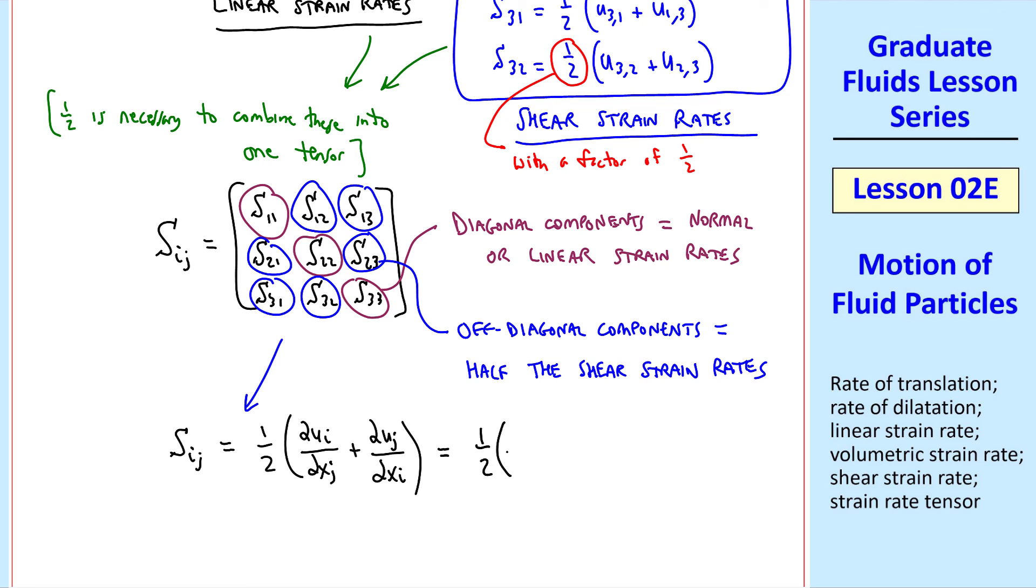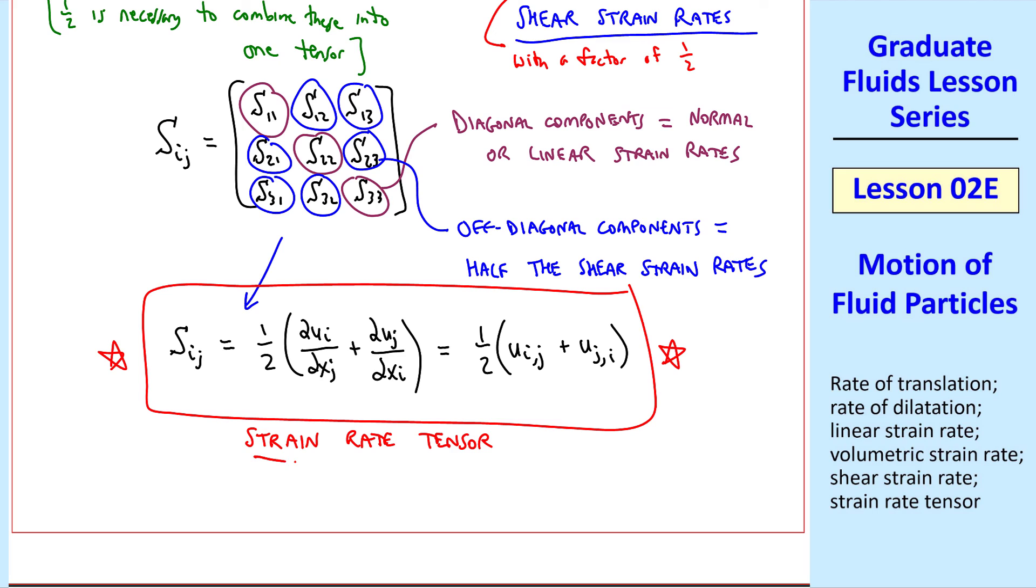Or in common notation, one-half ui comma j plus uj comma i. This is the strain rate tensor in tensor notation.